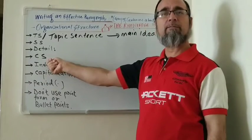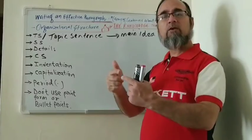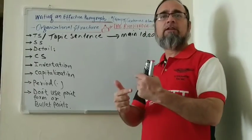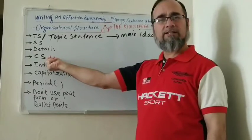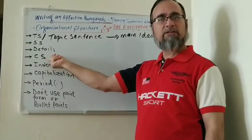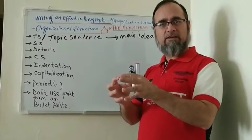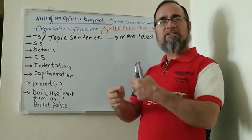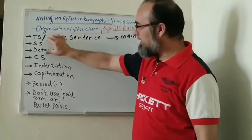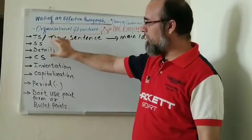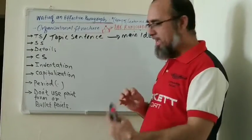We give details regarding the main idea — the topic sentence we introduced — through examples or other supporting details. The last sentence of the paragraph is the concluding sentence. The concluding sentence is a reminding sentence about the main idea. We rephrase the topic sentence in different words in the concluding sentence, basically reminding once again and sticking to the main idea but saying it in a different way.